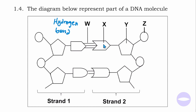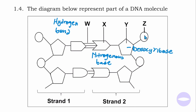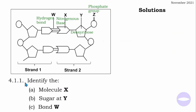X is a nitrogenous base. Y is the deoxyribose sugar — the sugar molecule of DNA is deoxyribose. Z is a phosphate group. These are the labels for the parts shown in the diagram, and you have Strand One and Strand Two.